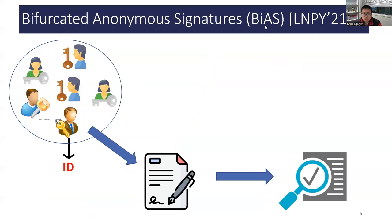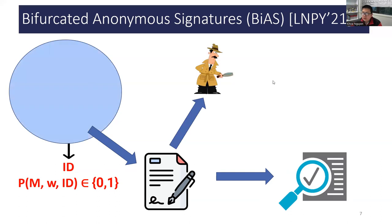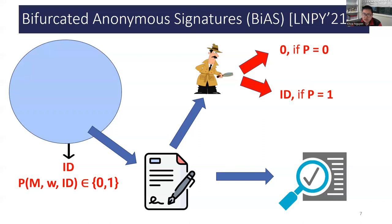A new approach towards solving this tension was proposed last year at EuroCrypt in a work by Libert, myself, Bichsel, and Jung. We introduced bifurcated anonymous signatures, or BAS for short, which can be seen as a hybrid of ring signatures and group signatures. More precisely, a given BAS signature could be traceable or non-traceable depending on a predicate P computed by the signer before signing. If P is 0, then the signer is non-traceable and the authority can learn nothing about ID, as in ring signatures. If P is 1, then the signer is traceable and the authority can recover ID, as in group signatures.